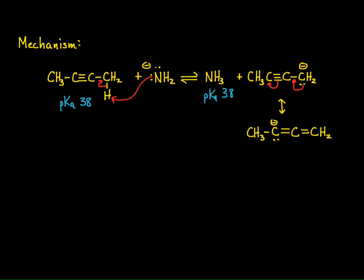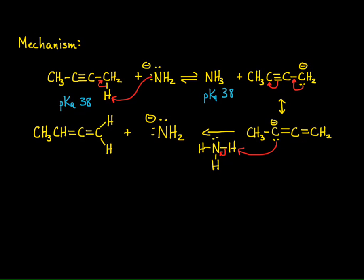This is a very strong base, and it can be protonated by ammonia because we're using ammonia as a solvent, and ammonia is also a byproduct of the first step. I can simply remove a proton from ammonia, and notice I regenerate the amide anion, and I end up with my allene. This is where the allene is an intermediate in this isomerism process.